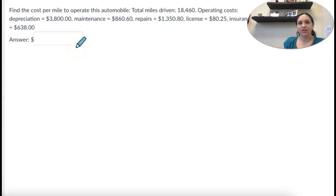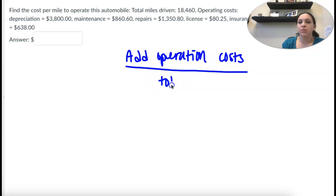Okay, last section we are finding the cost per mile to operate. So on these you want to add up all the operational costs and then we're going to divide by the total miles driven. So let's start, what are all of our operating costs?